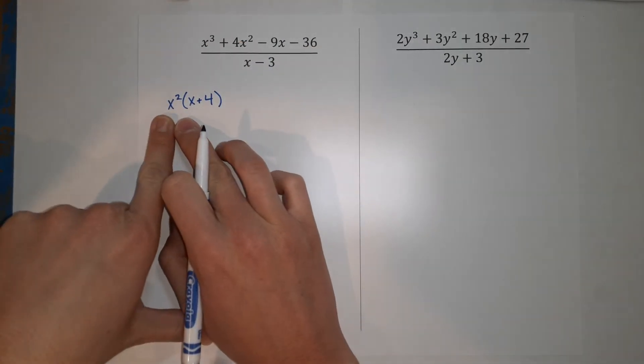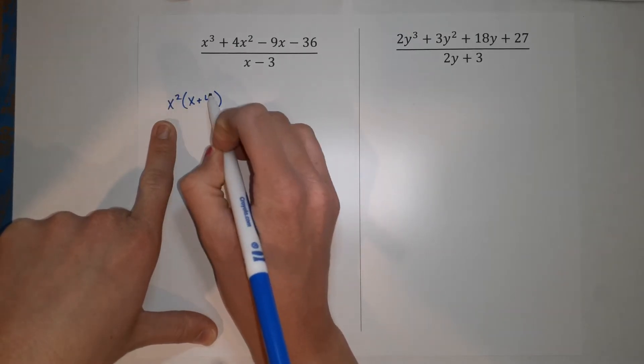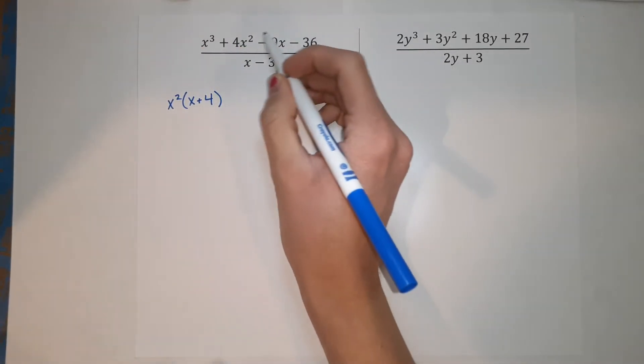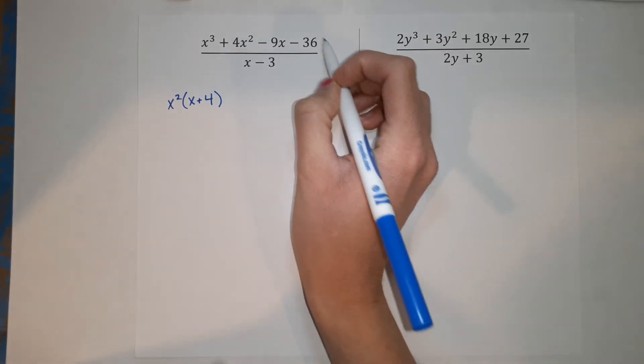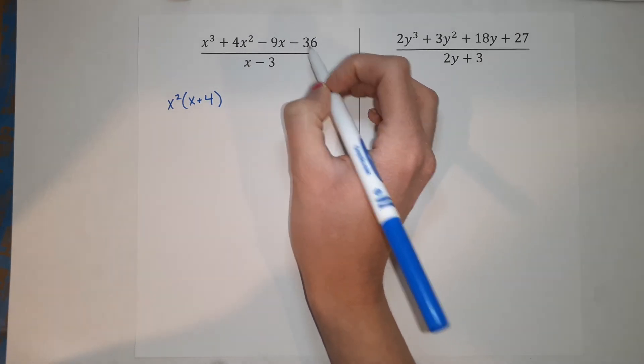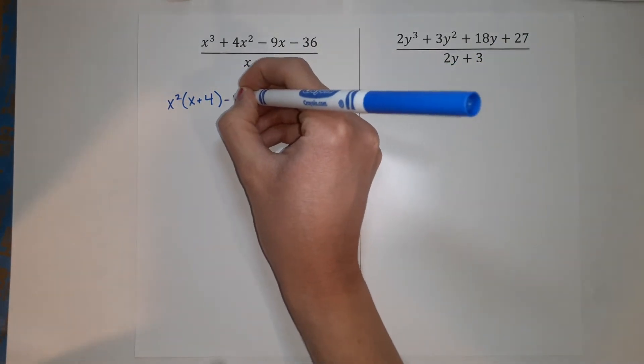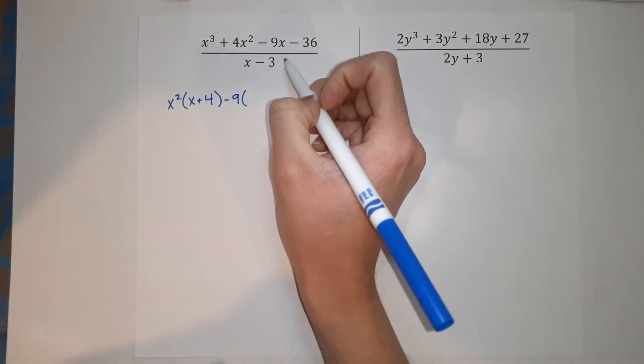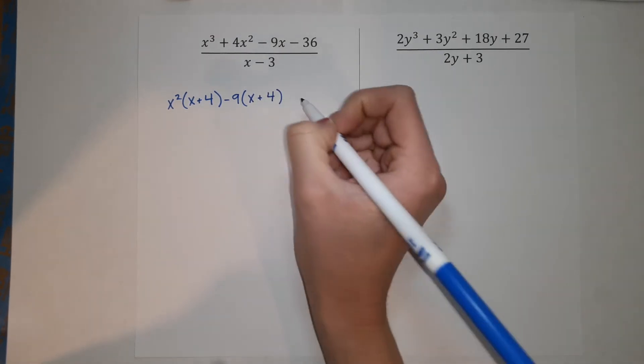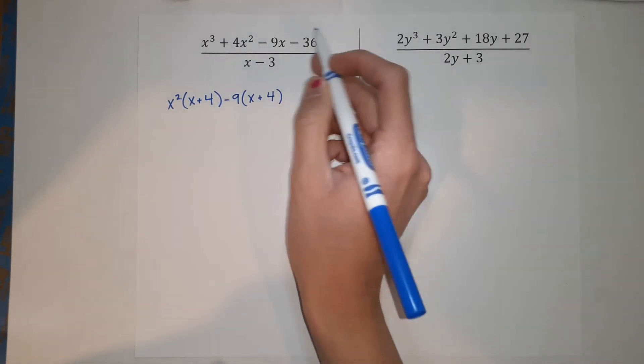So we looked at those first two terms. We pulled out an x squared. When I pull that x squared, what is left is x plus four. If I multiply that x squared back in, I will get the x cubed plus four x squared. Now I'm going to look at these two terms here, negative nine x minus 36. Both of those numbers can have a negative nine pulled from them. So I'm going to write negative nine. And if I pull that out, what I'm left with inside the parentheses is x plus four. Why is it a plus four? Because when I multiply this negative back in, it will make that a negative 36.